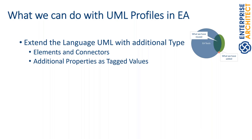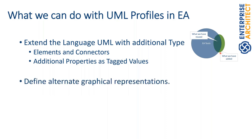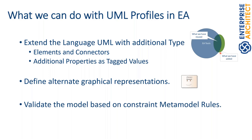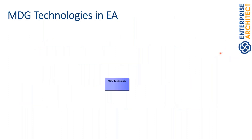We can define with UML profiles alternate graphical representations — add shape scripts and define our own language with our own notation. Based on metamodel constraints, we get automatic validations. With the help of an MDG technology, we can bundle everything together. An MDG technology is a kind of container which can be used for many different things: we can add images, scripts, model transformation templates, RTF templates, model searches, and much more. In this talk I have used UML profiles and metaconstraints, and we can put this together in an MDG technology for simple deployment.